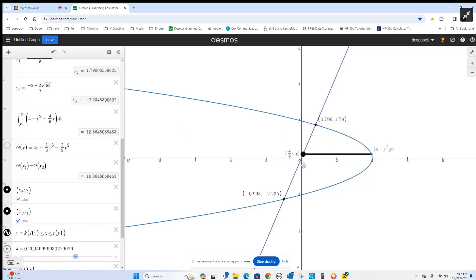And for every y between those two y values, the x coordinate at the right is 4 minus y squared. The x coordinate at the left is 4/9 y. We can get the length of that segment by x coordinate at the right minus x coordinate at the left.